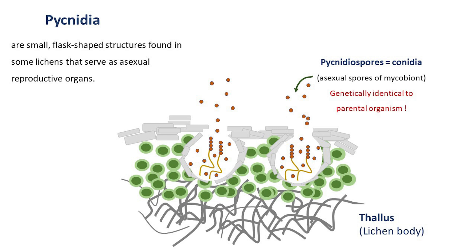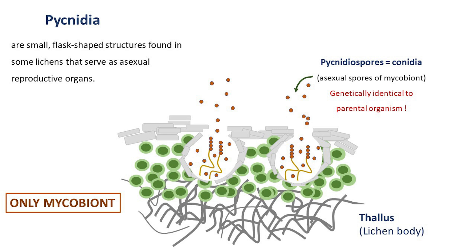It's important to emphasize that these asexual spores contain genetic information identical to that of the parental organism. Reproduction via pycnidia involves only the mycobiont, and the released conidia disperse without the photobiont. This peculiarity can often be disadvantageous for lichen formation, because pycnidiospores must encounter a suitable photobiont in the environment, which can be very challenging.